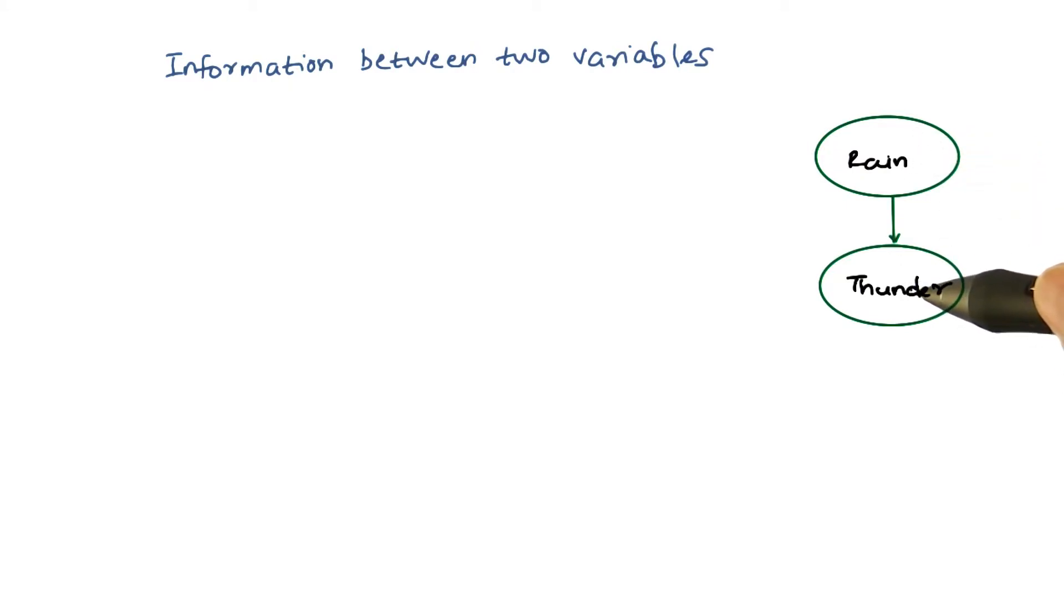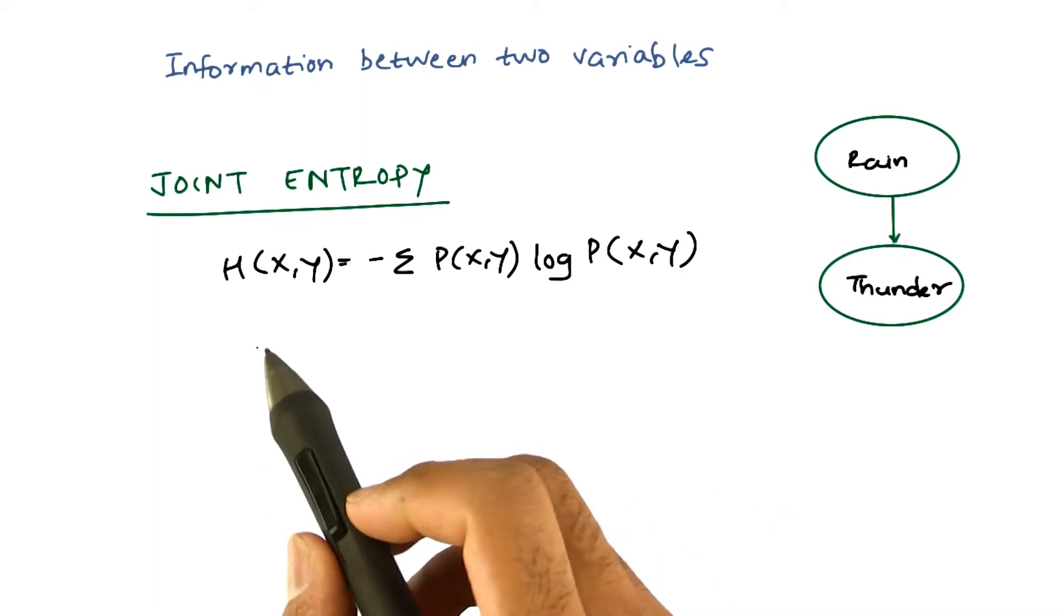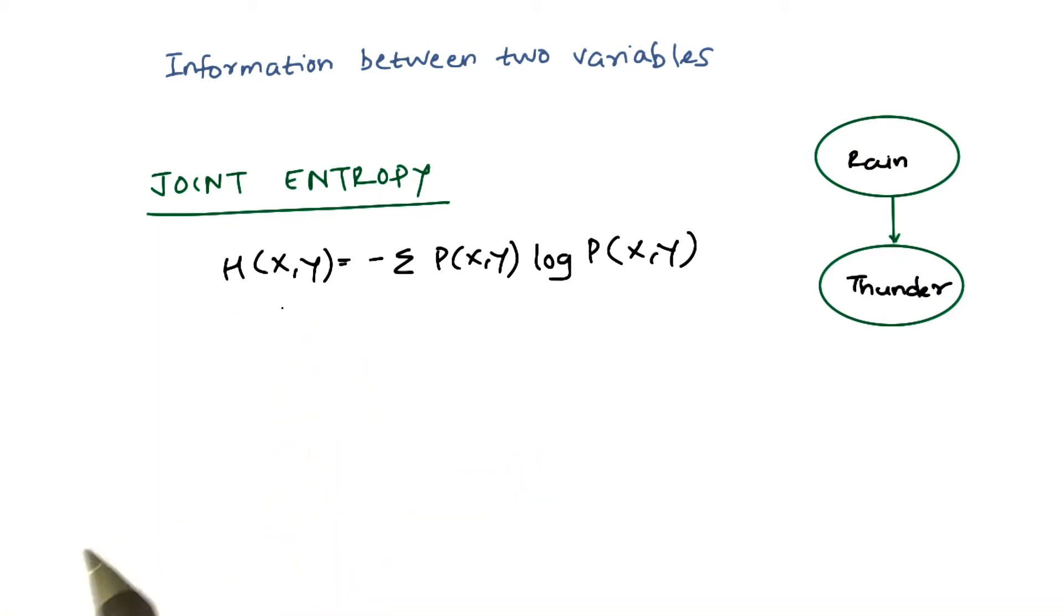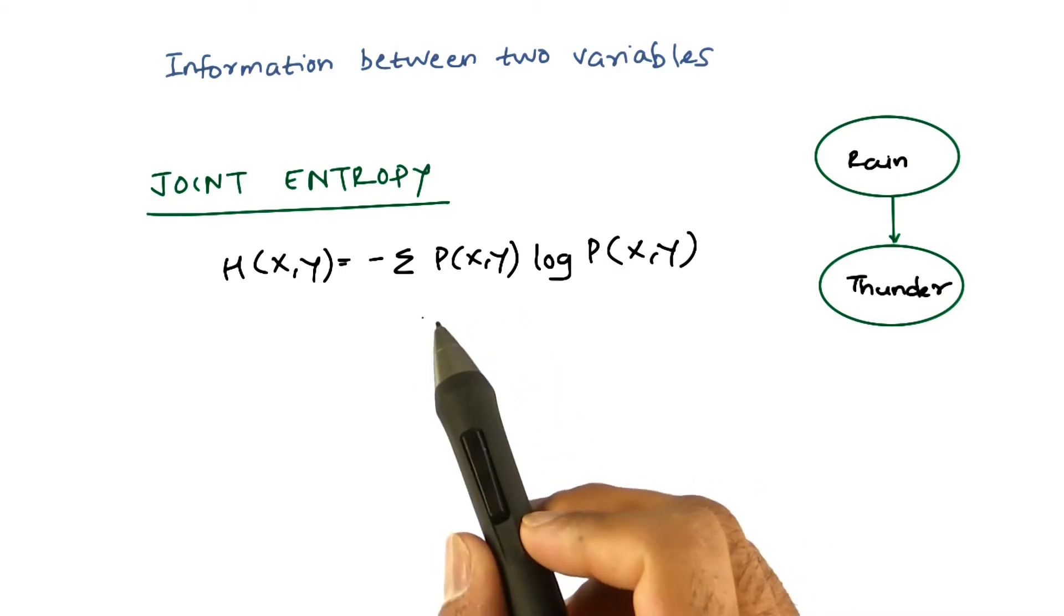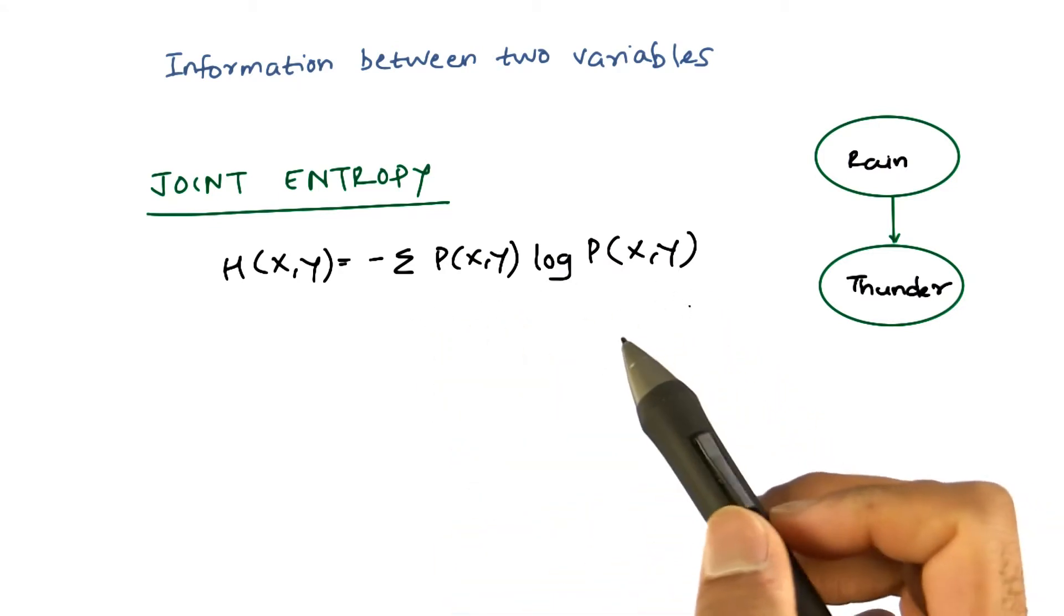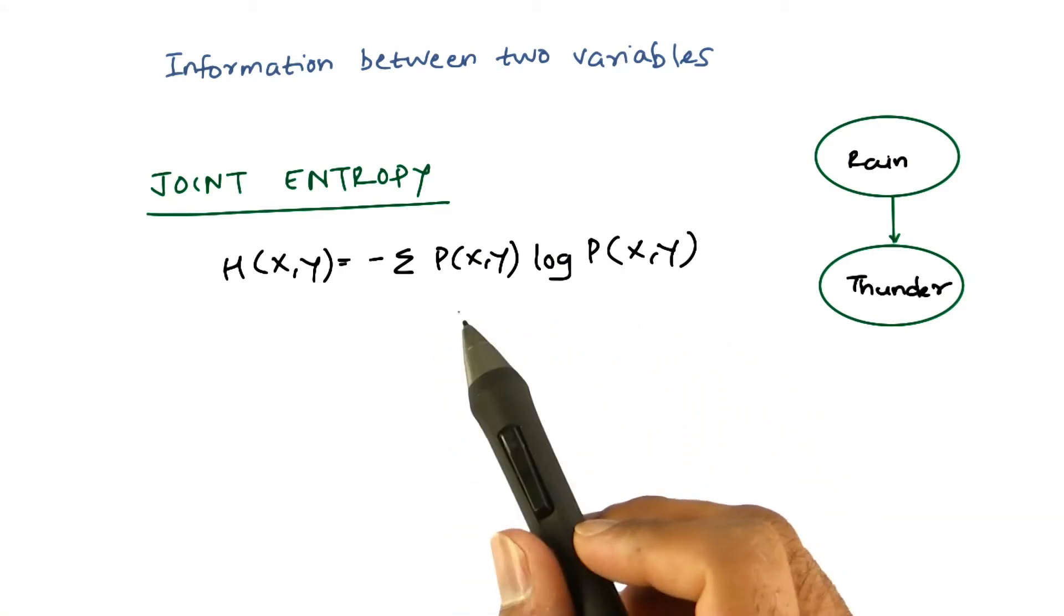We can measure that in two different ways. The first one is called joint entropy. Joint entropy is the randomness contained in two variables together, and it's given by h of x comma y. It is given by this particular formula, which is the joint probability distribution between x and y.